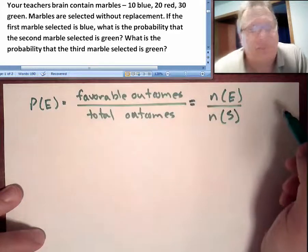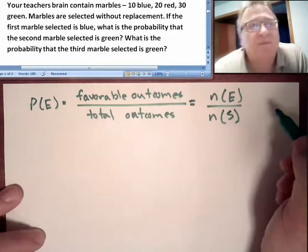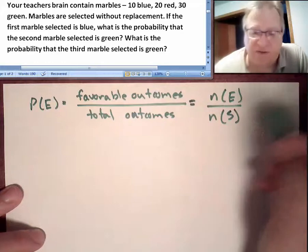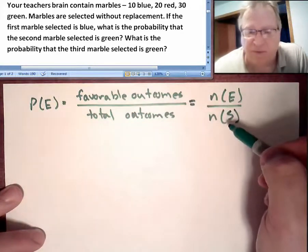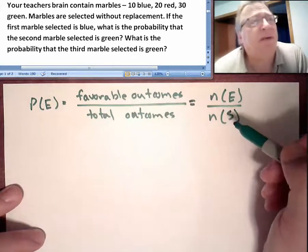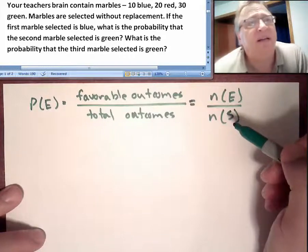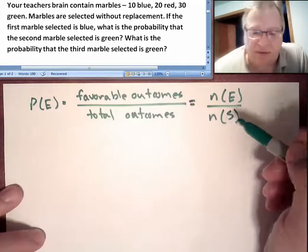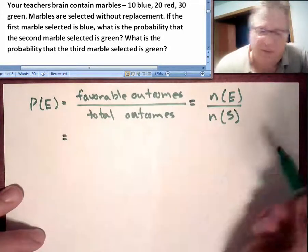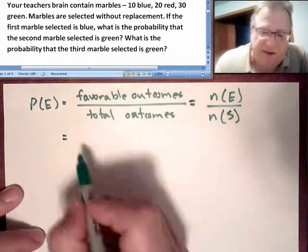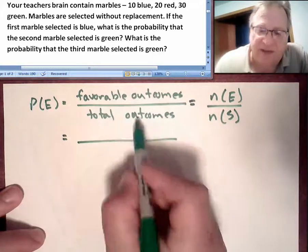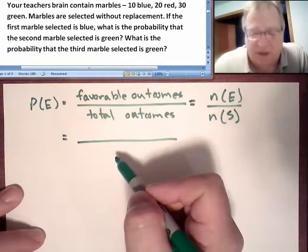Let's think about this. First of all, what are the total number of outcomes before we draw the first marble? How many marbles do we have? 10, 30, 60 marbles. So before we draw the first marble, in the denominator, total possible outcomes is going to be 60.